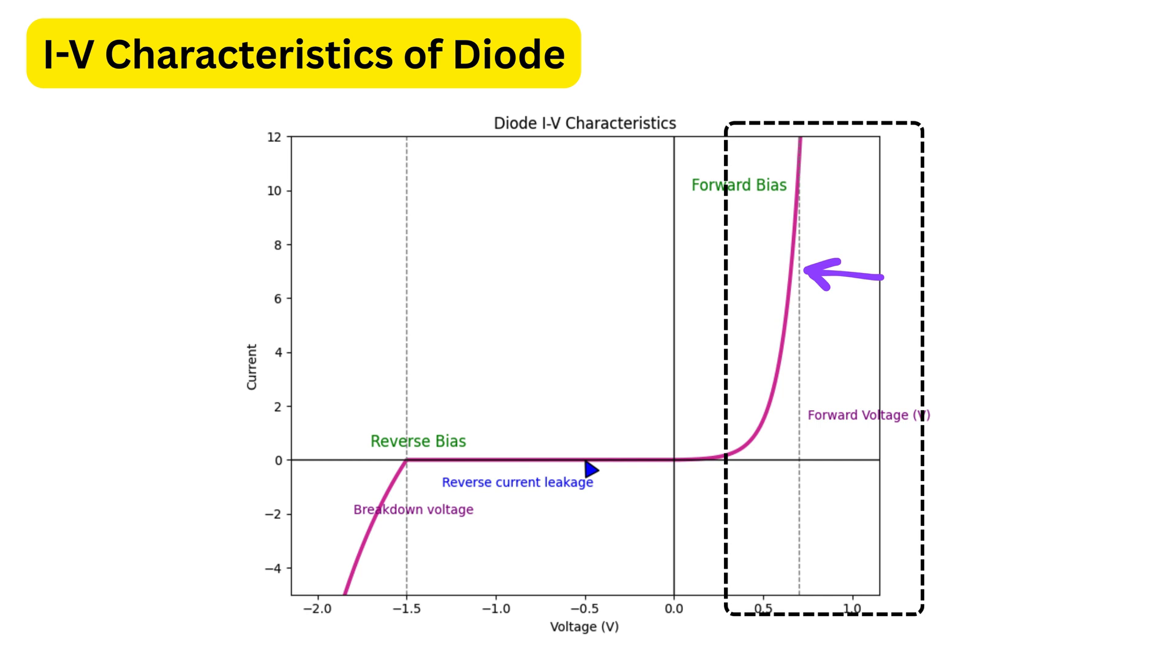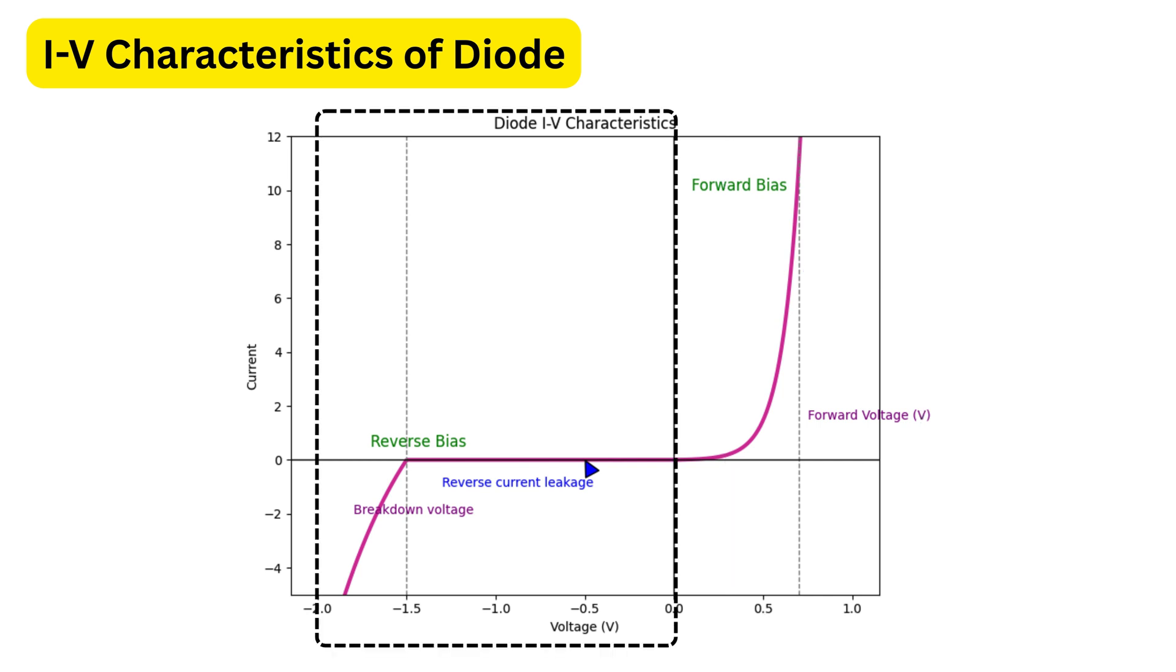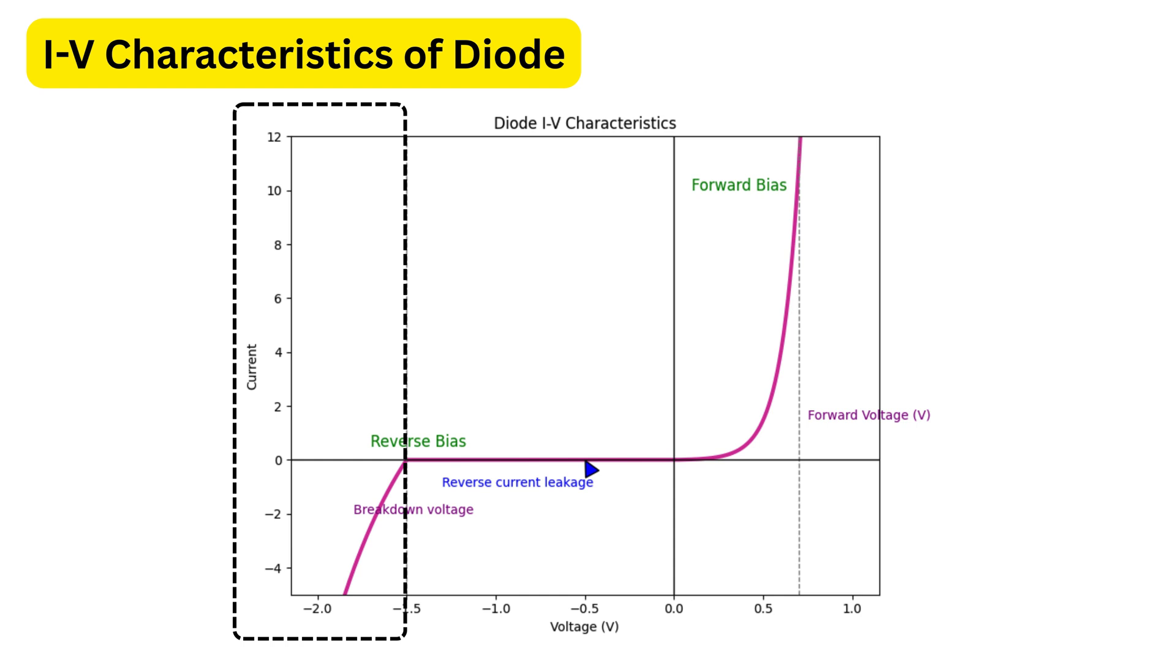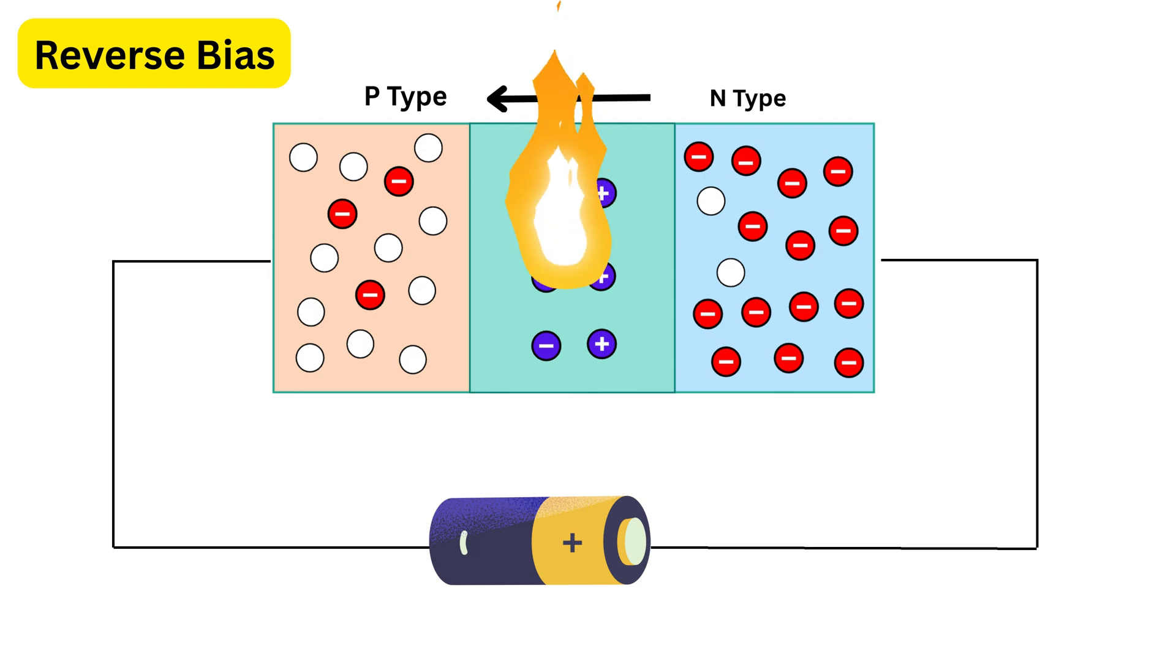In reverse bias, current stays almost zero with only a tiny leakage current flowing. But if reverse voltage becomes too high, the electric field across the depletion region becomes extremely strong. This high field can rip electrons out of their atoms, creating a sudden flow of charge. As a result, a large current starts flowing in the reverse direction. This is called breakdown, and if not controlled, it can overheat and permanently damage the diode.